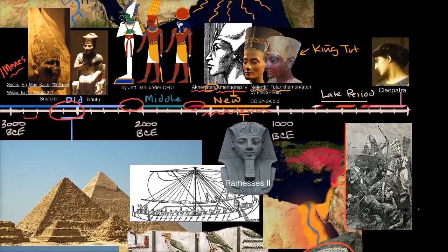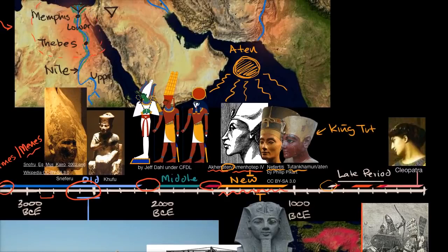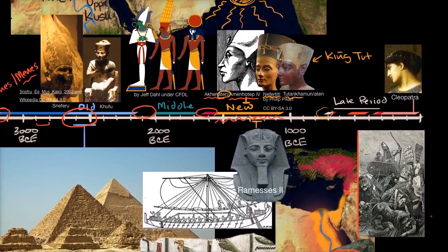Eventually the New Kingdom collapsed at the end of the second millennium. Over the next several hundred years, Egypt became fragmented under several rulers: the Kushites from the upper Nile ruled for a brief period, then the Assyrians — a Mesopotamian civilization — ruled for a time, and then the Persians took over. Cambyses, the son of Cyrus the Great, conquered Egypt, making it part of the Achaemenid Empire, until the conquering of Alexander the Great.